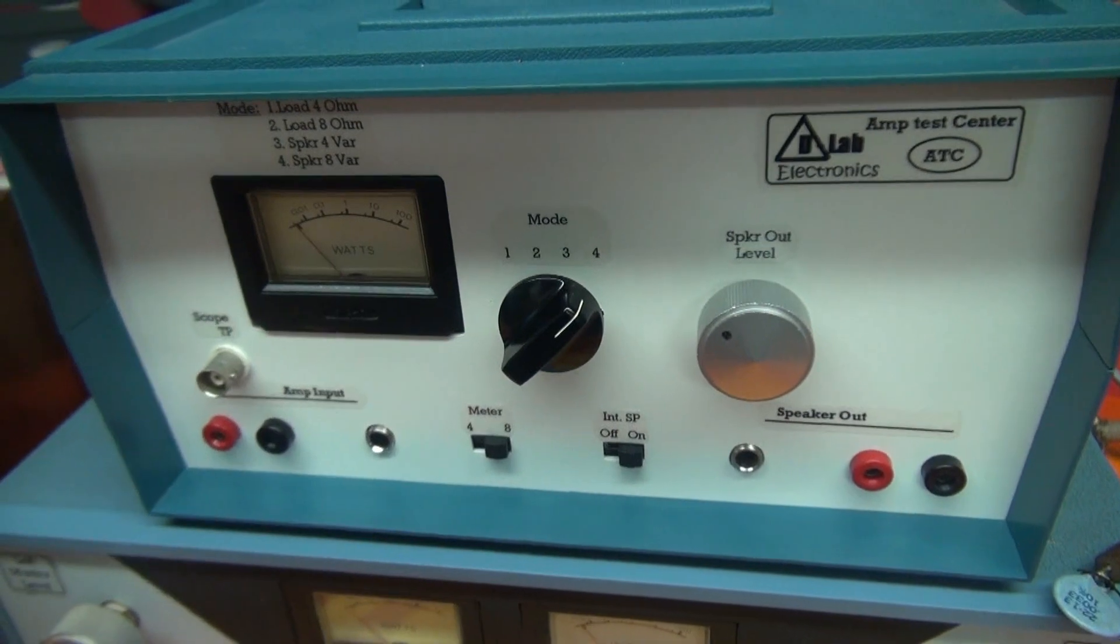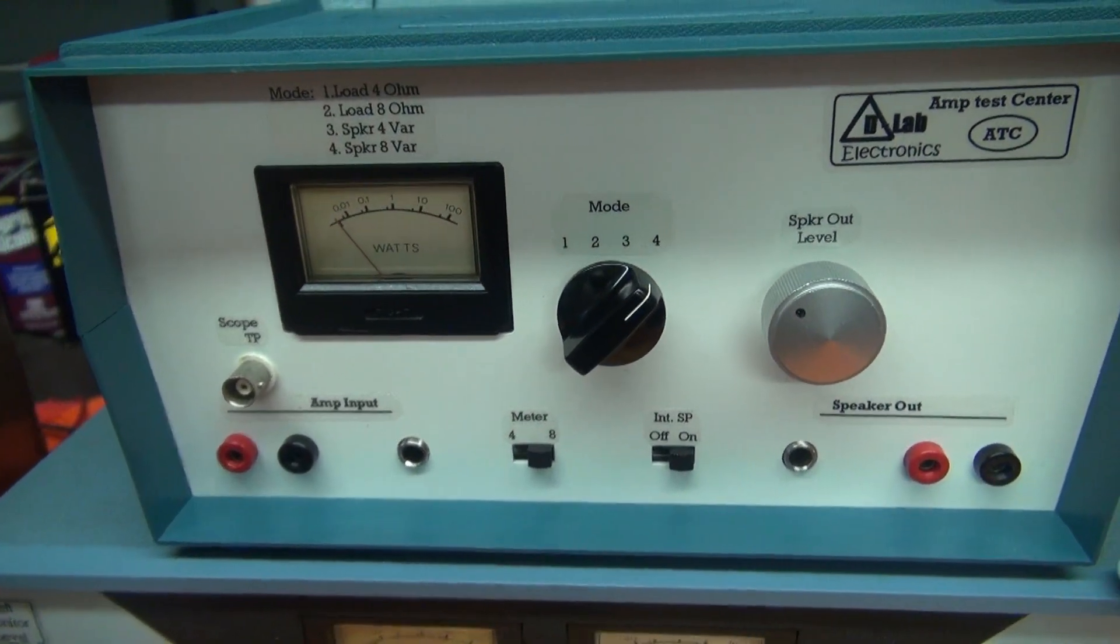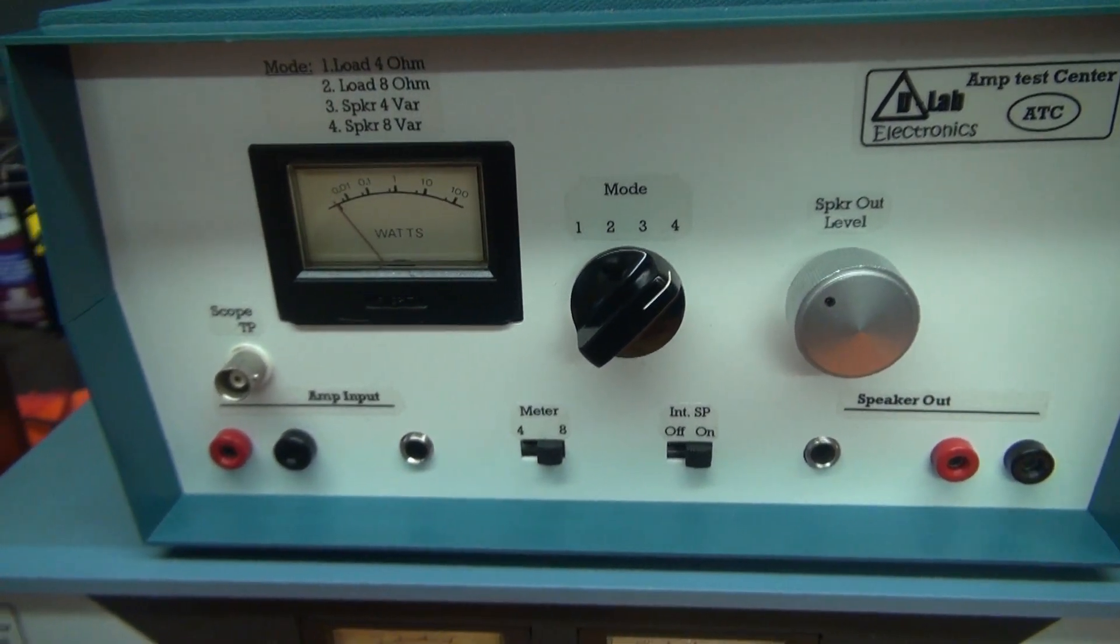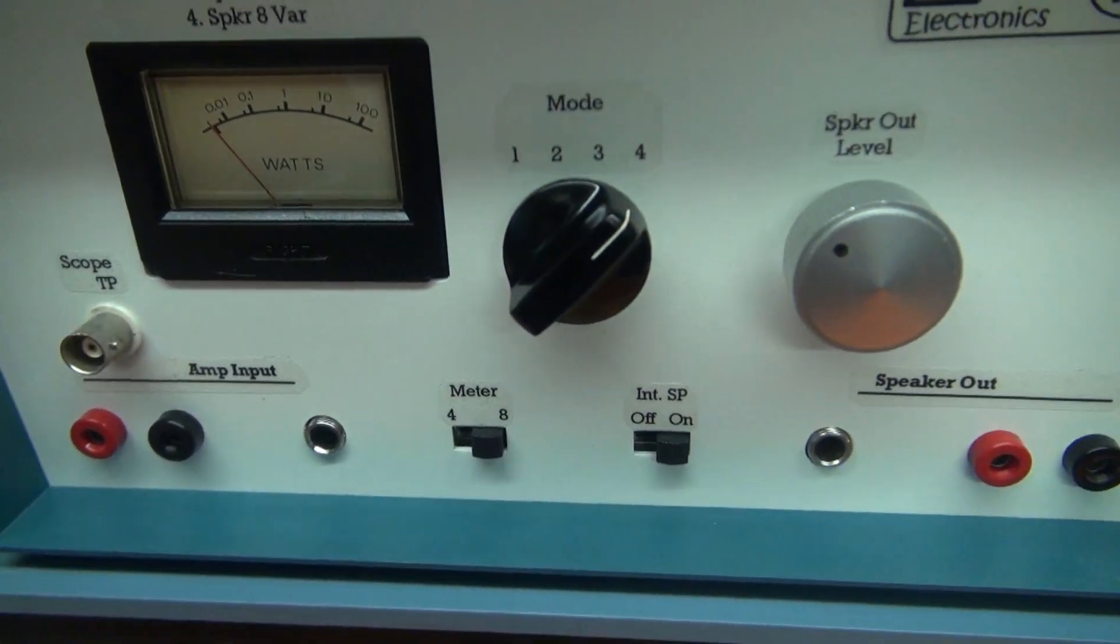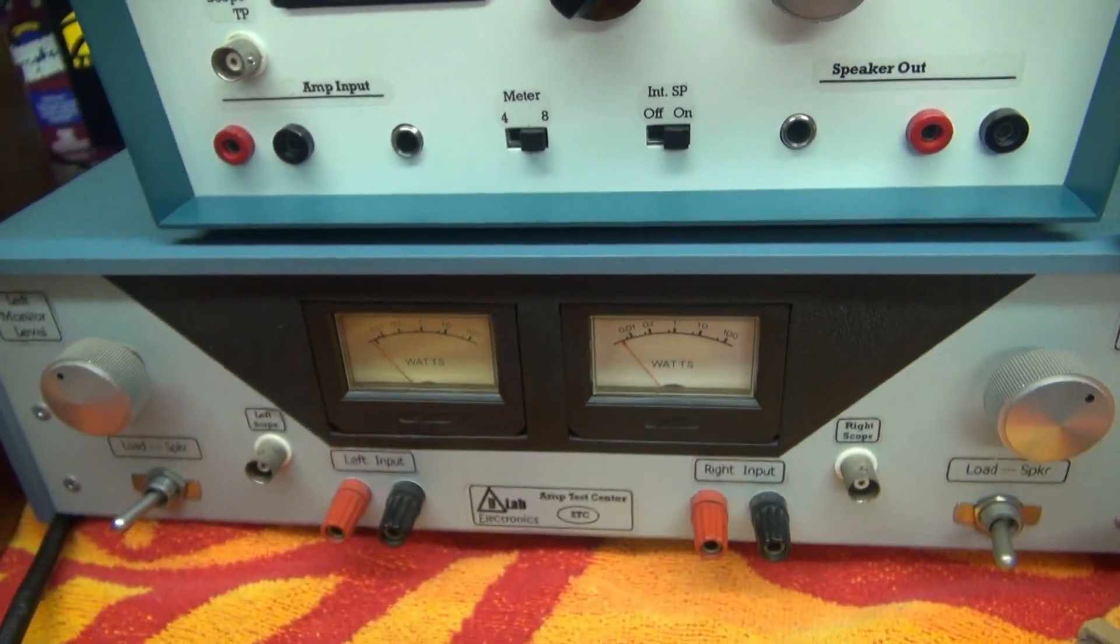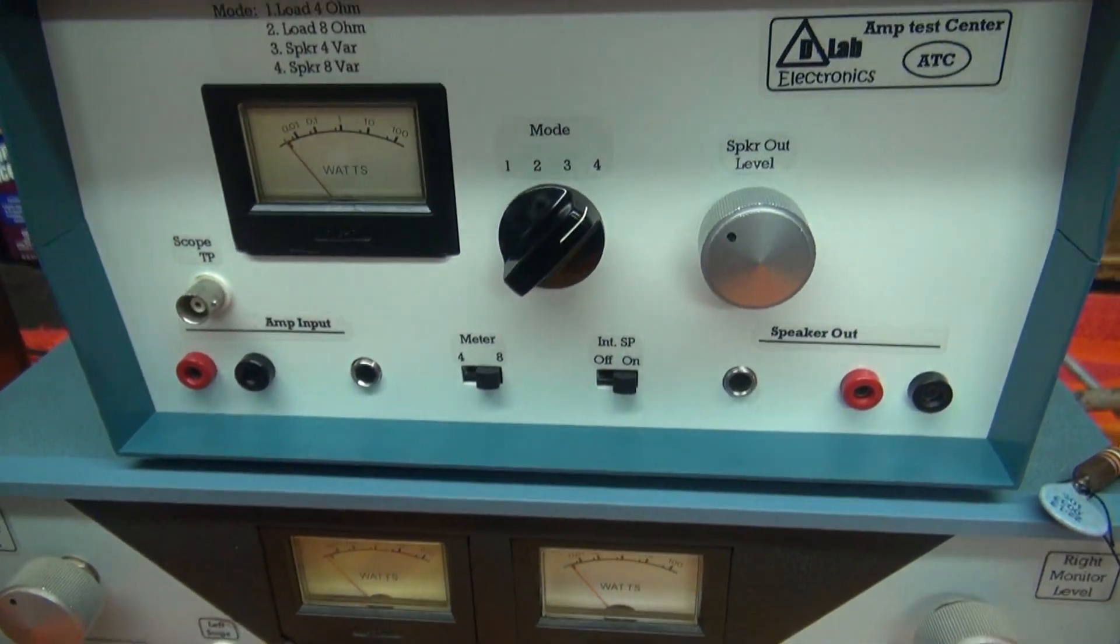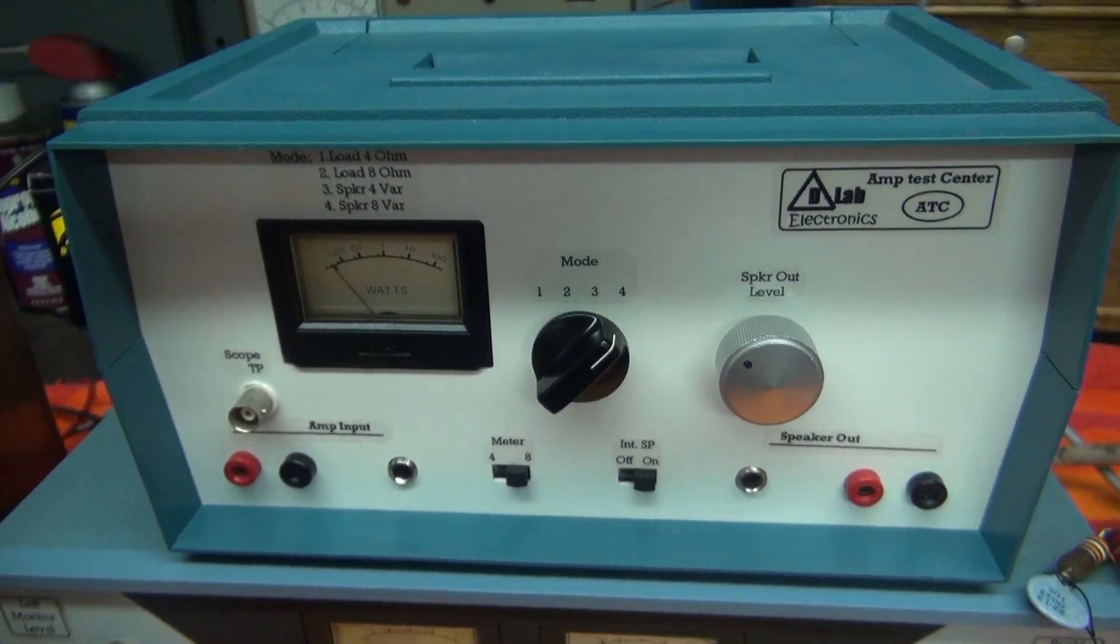So what we did is we built it. Here it is. A monaural audio test set. This guy has the built-in wattmeter, the L-pad, just like the stereo model. But this one has a few more perks. Let me show you what it does.